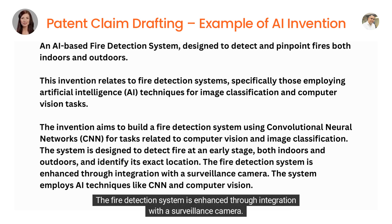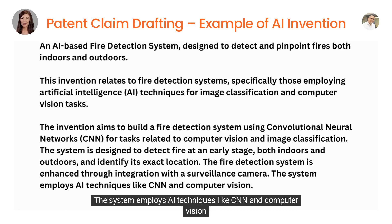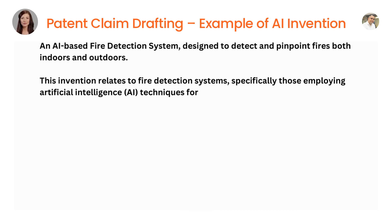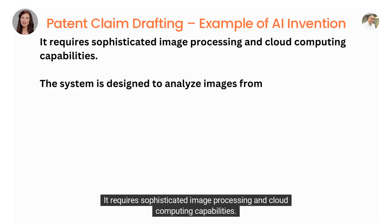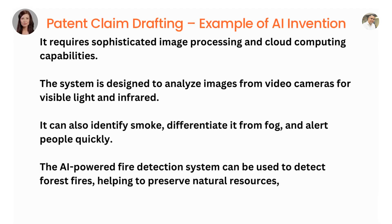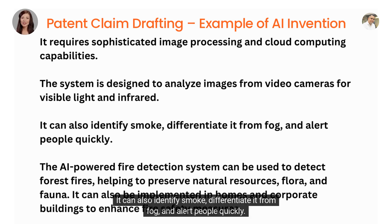The fire detection system is enhanced through integration with a surveillance camera. The system employs AI techniques like CNN and computer vision, and requires sophisticated image processing and cloud computing capabilities. It is designed to analyze images from video cameras for visible light and infrared, and can also identify smoke, differentiate it from fog, and alert people quickly.